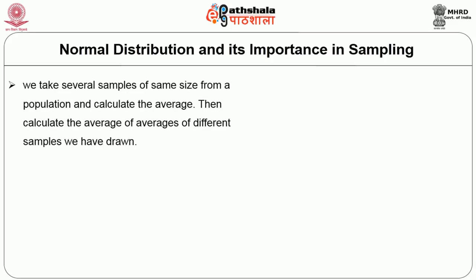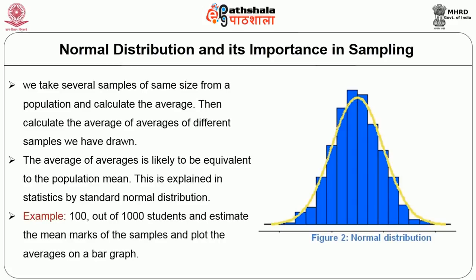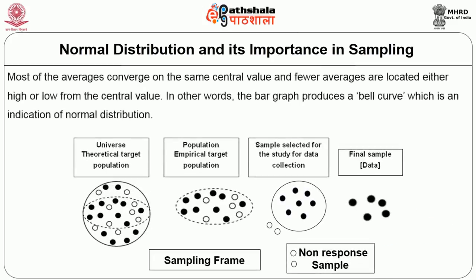Imagine we take several samples of the same size from a population and calculate the average, then calculate the average of averages of the different samples drawn. The average of averages is likely to be equivalent to the population mean. This is explained in statistics by the standard normal distribution. If we draw several samples of, say, 100 out of 1000 students and plot the mean marks on a bar graph, we can find that most of the averages converge on the same central value, and fewer averages are located either high or low from the central value. In other words, the bar graph produces a bell curve, which is an indication of normal distribution.